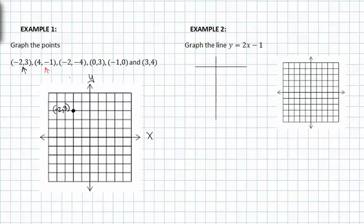Let's try the coordinate point (4, -1). Remember that 4 represents the horizontal movement from the origin, and the second value, negative one, represents the vertical movement up or down from the origin. So starting at the origin, we're going to move to the right four spaces, and then down one space since it was negative. And this is our point (4, -1).